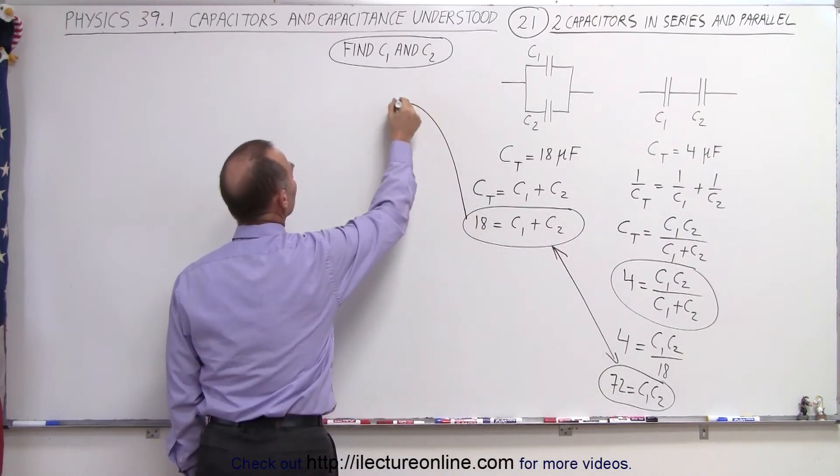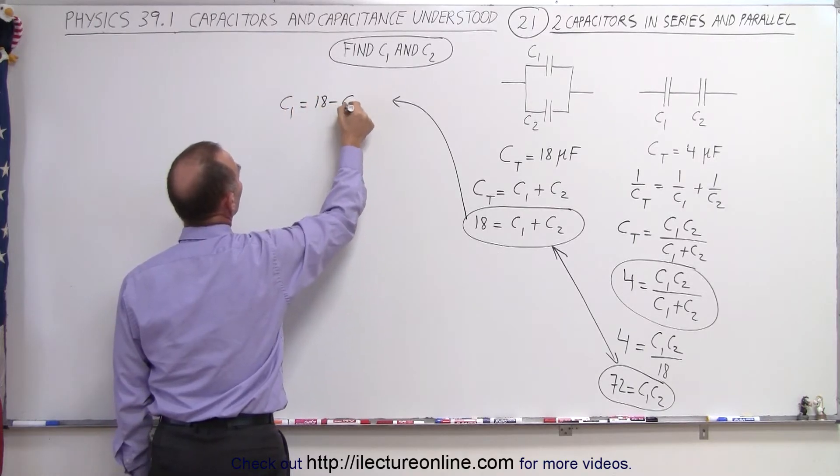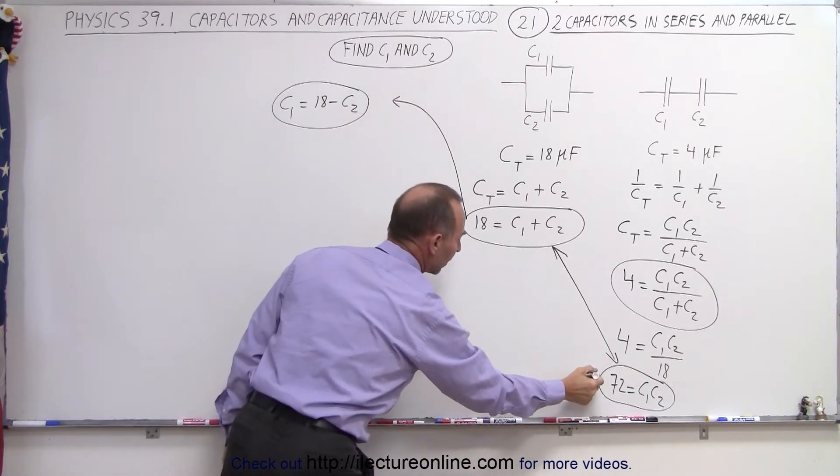So starting with this equation here, we can write that C1 is equal to 18 minus C2 and take that formula equation and plug it into this equation.